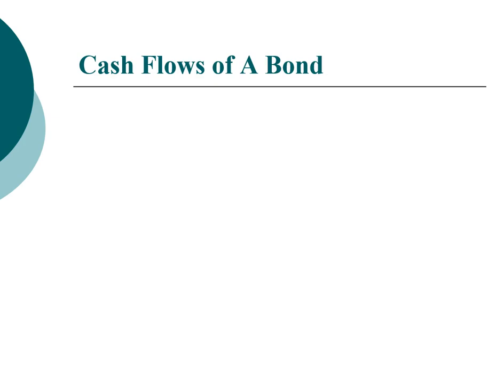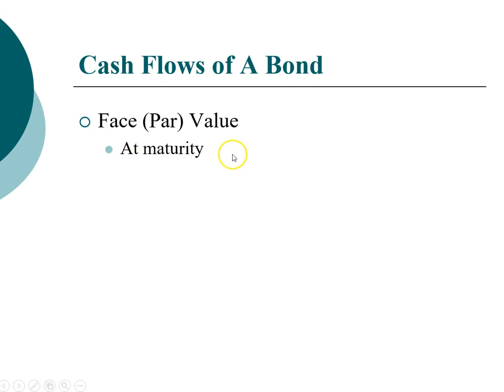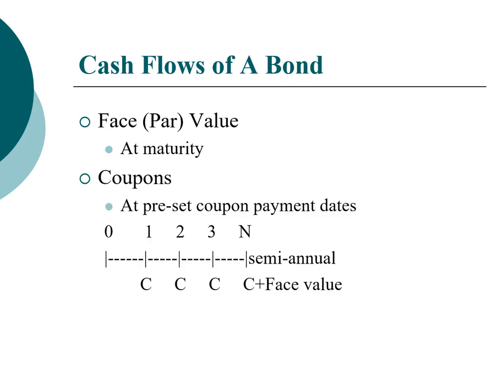Now let's take a look at a specific example — a bond. To value a bond we need to know the cash flows associated with it. There are two types of cash flow. The first is called face value or par value — the amount returned to the investor at the time of maturity. The second is the interest payment, which we call the coupon. The coupon is the amount of payment you receive on specific recurring dates.